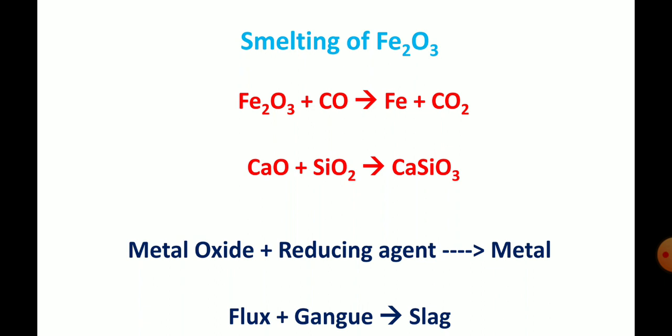So in this case, the reducing agent is carbon monoxide and the flux is CaO. A basic flux CaO is added because the gangue particle SiO₂ is acidic in nature. The flowchart summarizes: metal oxide plus reducing agent gives metal; flux plus gangue gives slag. So the smelting process is completed.